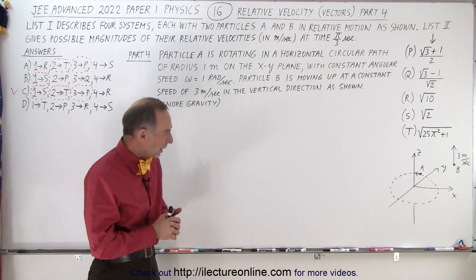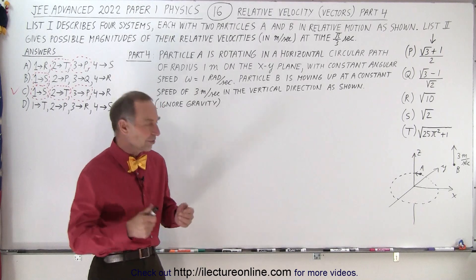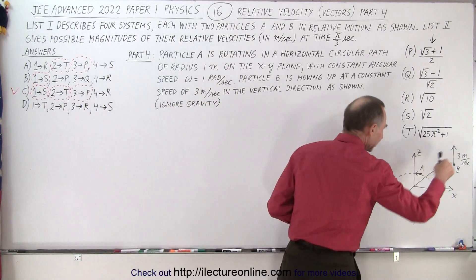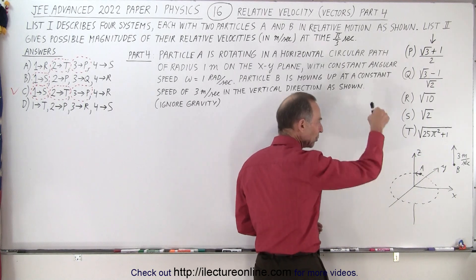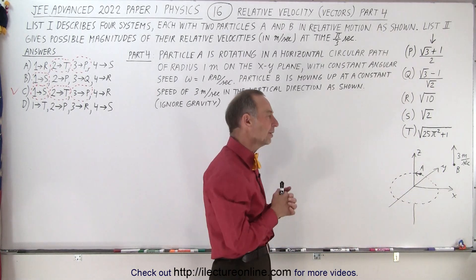So at first when I looked at it, I thought, well, that's kind of strange. They're not telling us where exactly this particle B is. It could be anywhere and it's moving up at three meters per second. So how can we find the relative velocities?